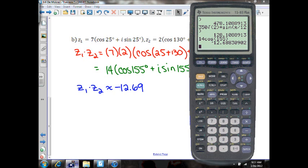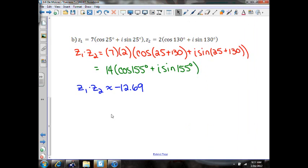And then 14 sine of negative, sorry not negative 155, just 155. That should be positive, so plus 5.92i. So that's what we have there.